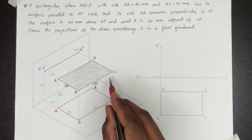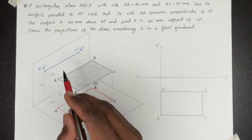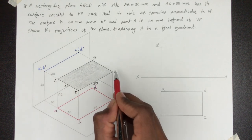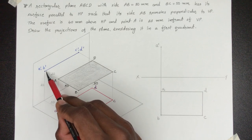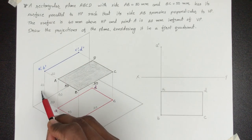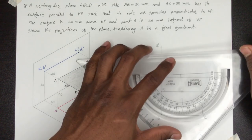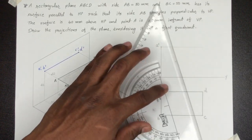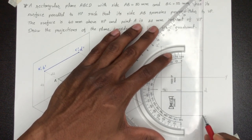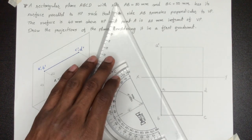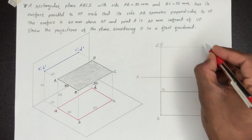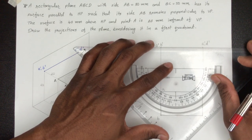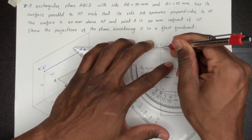Plane जब horizontal plane के parallel होगा तब front view में हमें एक line मिलेगी. A और B points यहाँ पे coincide होंगे और C और D points यहाँ पे. Front view में जो यह line मिलेगी उसका XY से distance होगा 40 mm. तो यहाँ से हम एक parallel line draw करेंगे, और C और D से एक projector ऊपर extend करेंगे. यहाँ पे होगा B' और यहाँ पे दो points होंगे C' और D'.